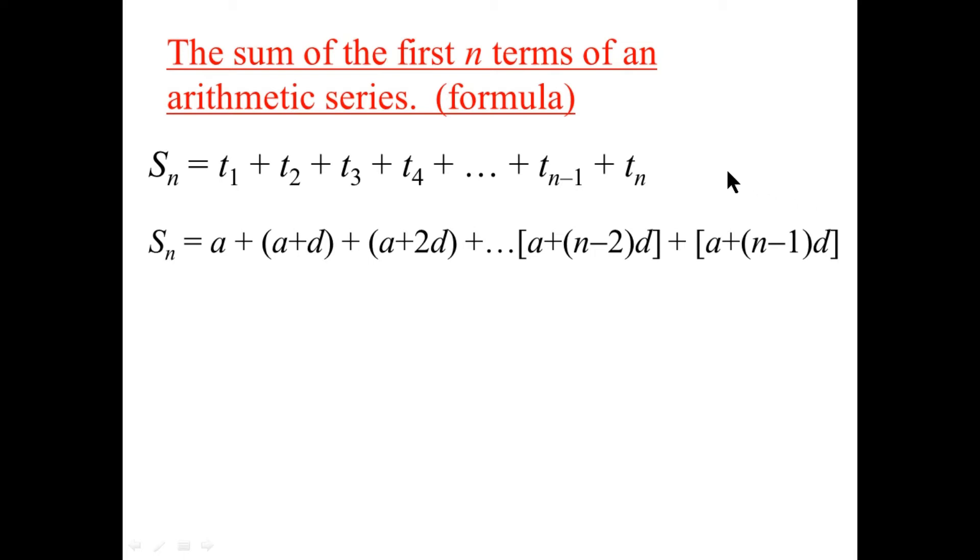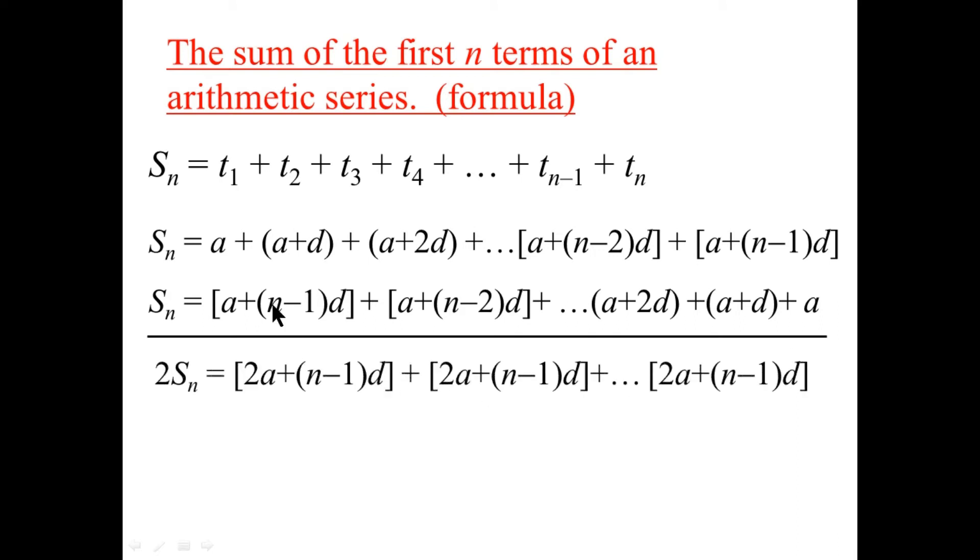Now, according to Mr. Gauss, we could write it backwards. So take this term and write it over here. Take this term and write it all the way over here, and then draw a line and add. And in every case, we'll get A plus this, which is 2A, plus N minus 1 times D.